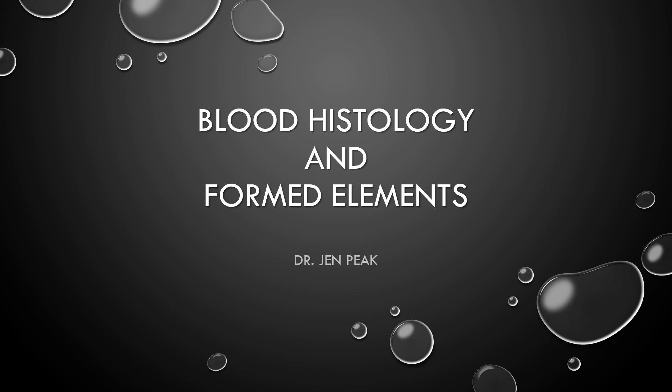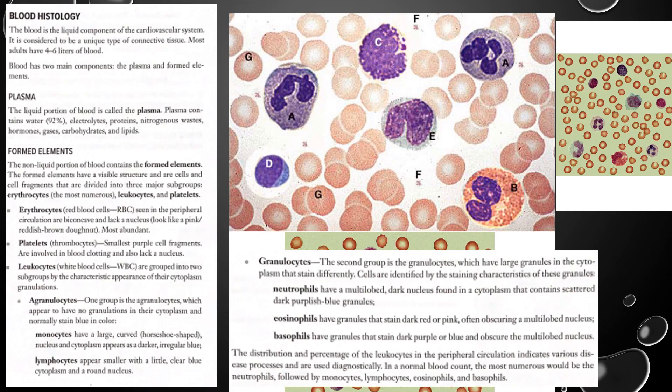Welcome to today's talk about blood histology and the formed elements of the blood. You already know that blood is a connective tissue. Most human adults end up with four to six liters of blood, and the vast majority of the blood ends up being water because the plasma — 92% of the plasma, which is the liquid portion of the blood — will end up being water. That plasma will also contain electrolytes, salts, proteins, and nitrogenous waste products that need to get removed from the blood. It will also carry hormones and gases.